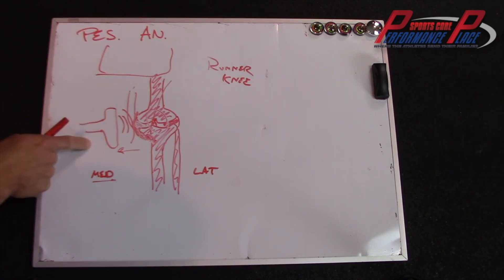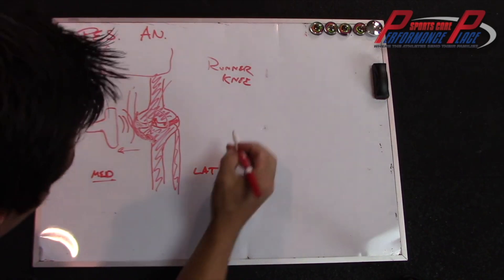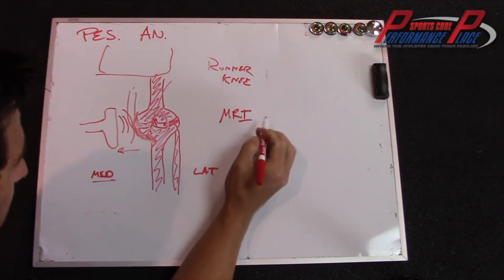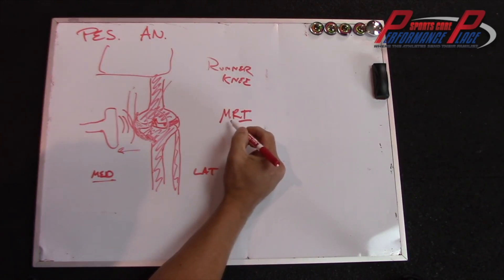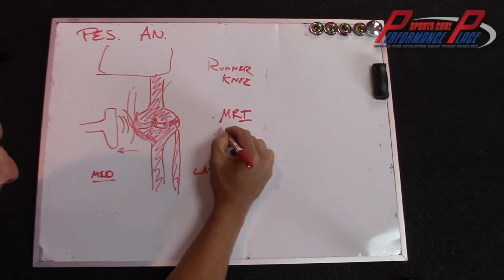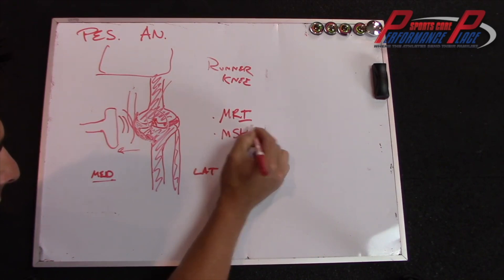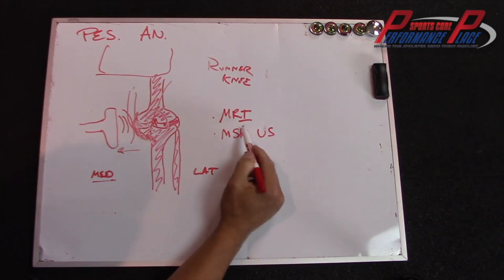So what you're going to want to see if you want to confirm this or not, here's the two things that will confirm it for you. If you really feel that it's pes anserinus, an MRI will find it. An MSK ultrasound will find it. And here's the pros and cons of both.